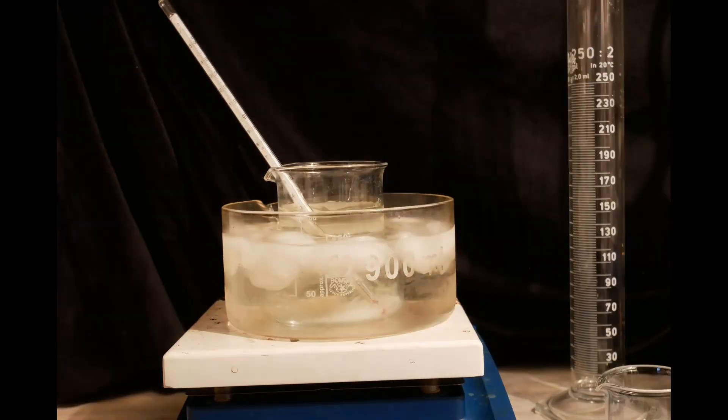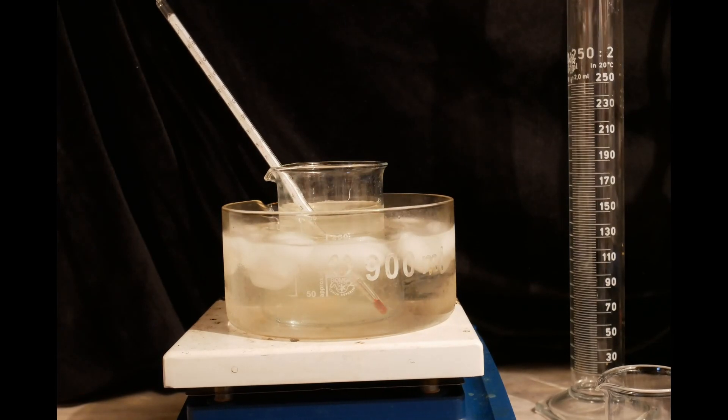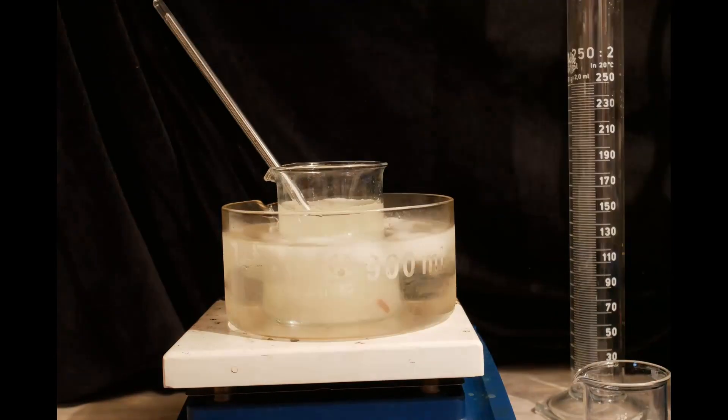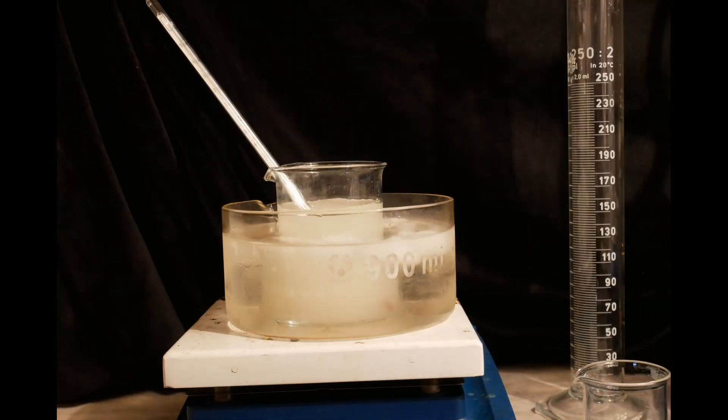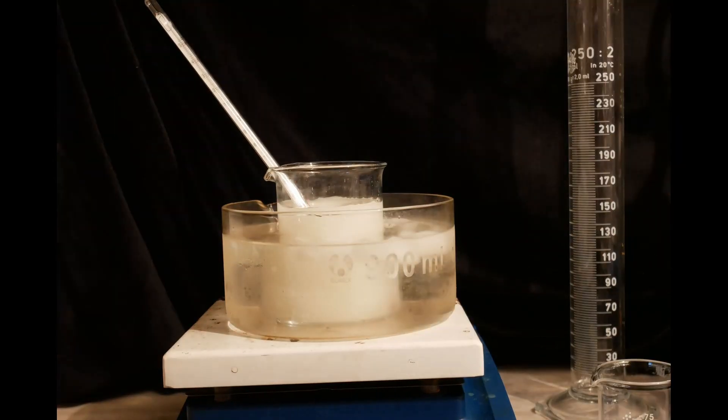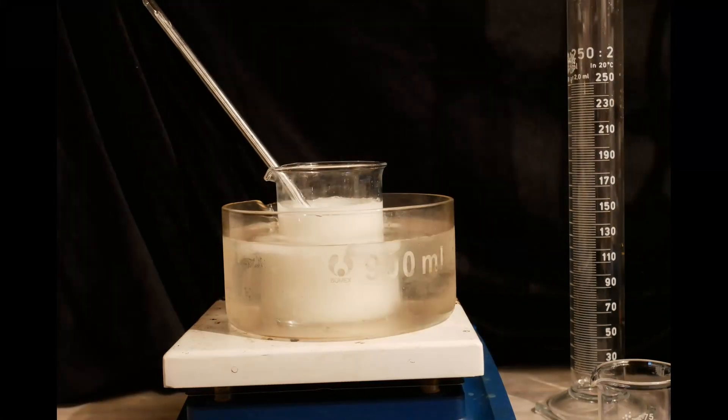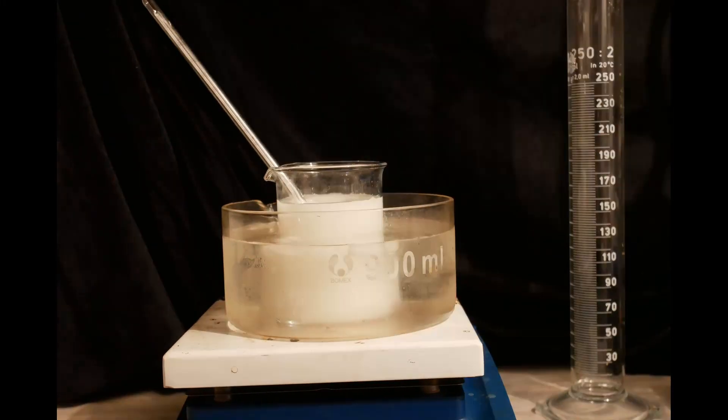The hypochlorite is cooled in an ice bath to 0 degrees and 34 grams of sodium hydroxide are dissolved in the solution. The temperature is kept below 20 degrees to prevent decomposition of the hypochlorite. Some white precipitate is falling out of the solution, which is probably sodium chloride.